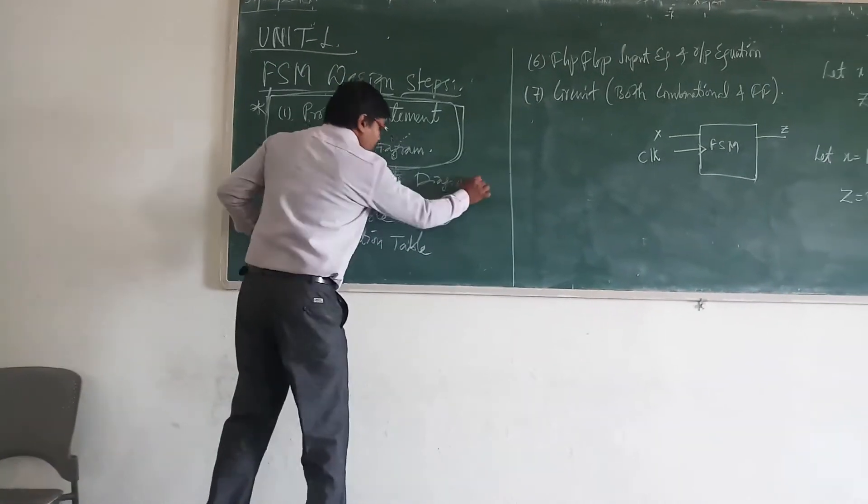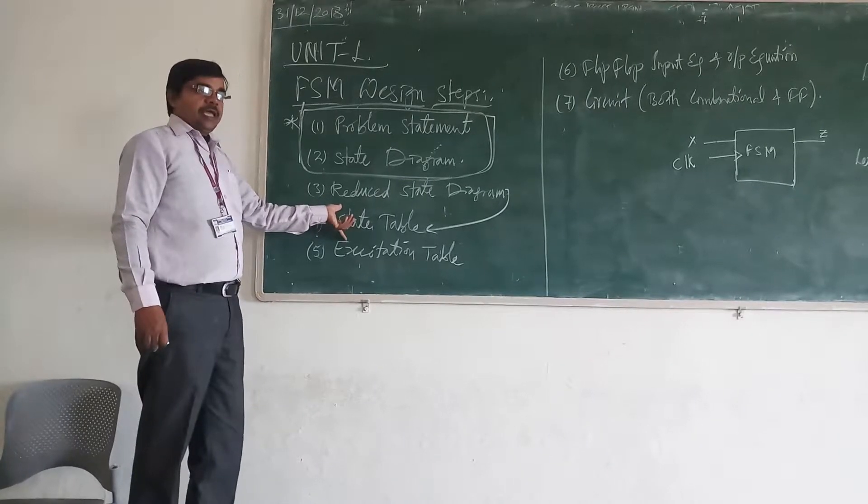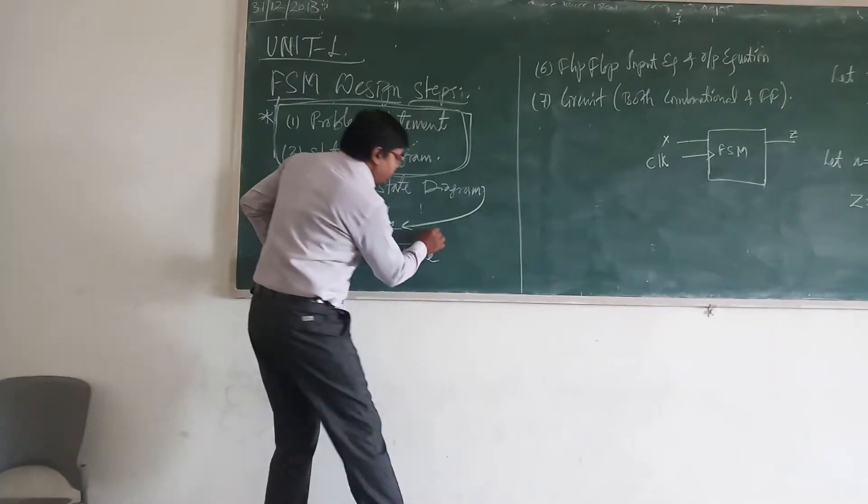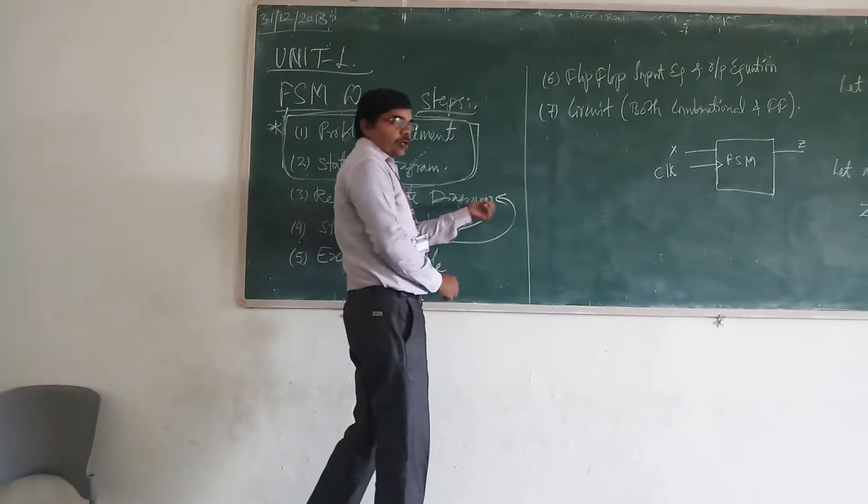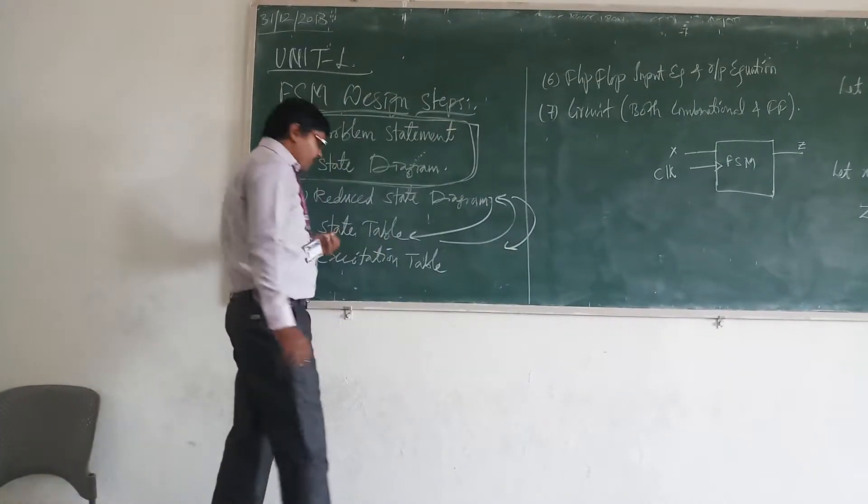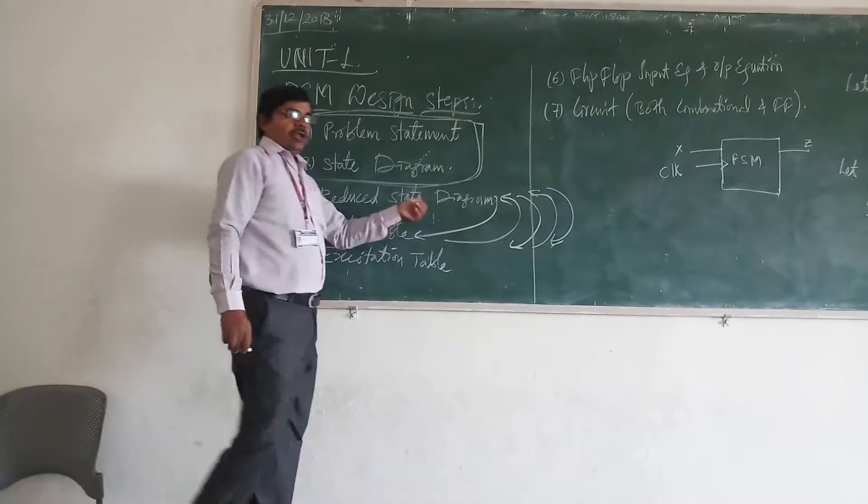This is the most critical step. And then we will go for your state table. From the state table, you will see whether it is possible to reduce it or not. If it is possible to reduce, then you will go for state table.